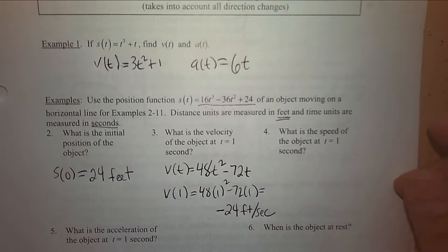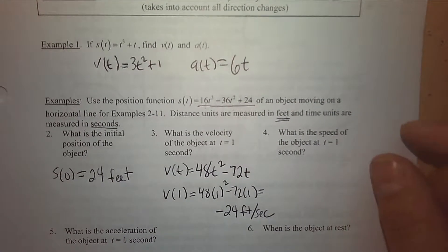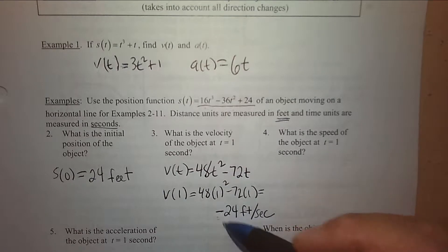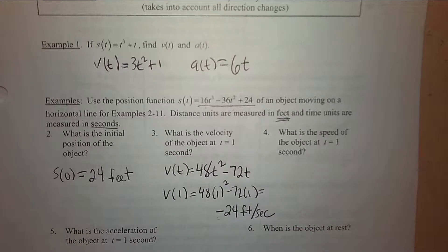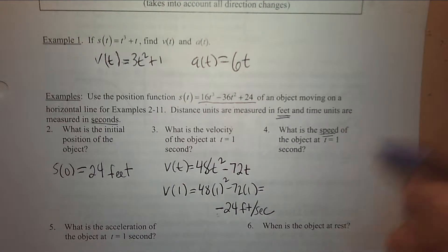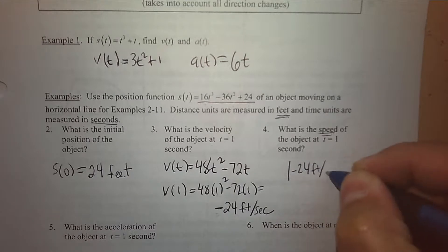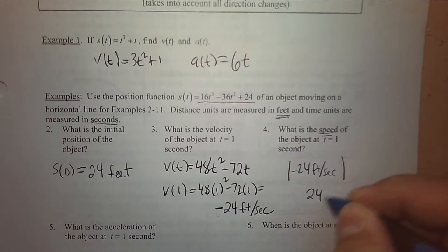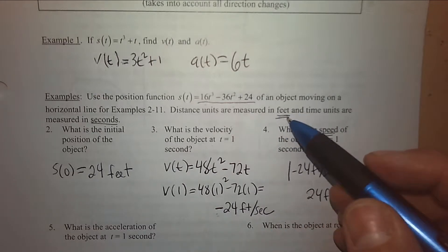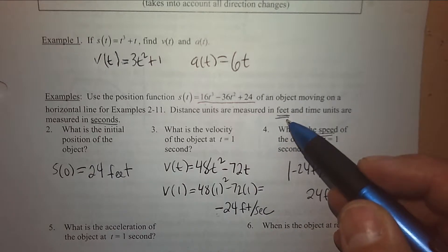That's the instantaneous rate. What direction is the object moving? At t = 1, it's moving to the left — because of the negative velocity. What is the speed at t = 1? It's the absolute value of that — and units matter. So the speed is 24 feet per second.